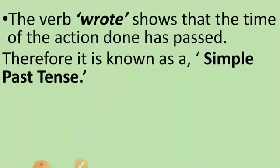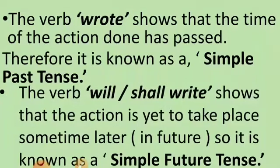Then, the verb 'wrote' shows that the time of the action done has passed — the action is already done, completed. Therefore it is known as simple past tense. Then, the verb 'will or shall write' shows the action is yet to take place. The action is not yet started — it is yet to take place later, somewhere in the future. So it is known as simple future tense.